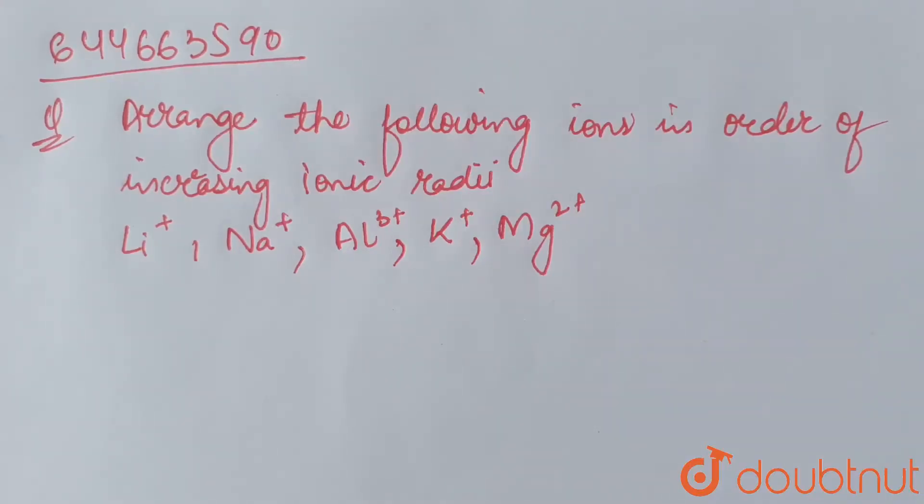Question says: Arrange the following ions in the order of increasing ionic radii. Ions given are Li+, Na+, Al3+, K+, Mg2+.